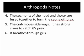The crab has strong claws that it can use to capture its prey. And also, like the prawn, it can breathe through its gills, which are its respiratory organs.